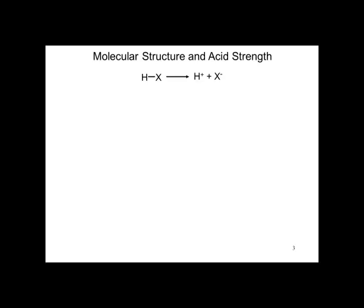Let's look at molecular structure and acid strength. For an acid like HX, the stronger the bond, the weaker the acid will be. That's why HI is stronger than HBr is stronger than HCl, which is much stronger than HF, which is a weak acid.